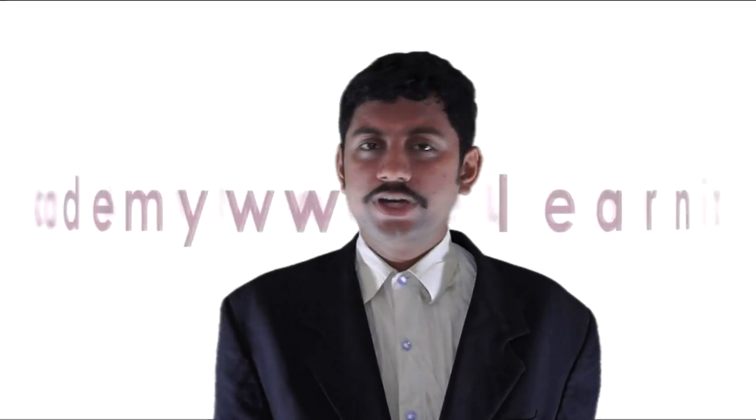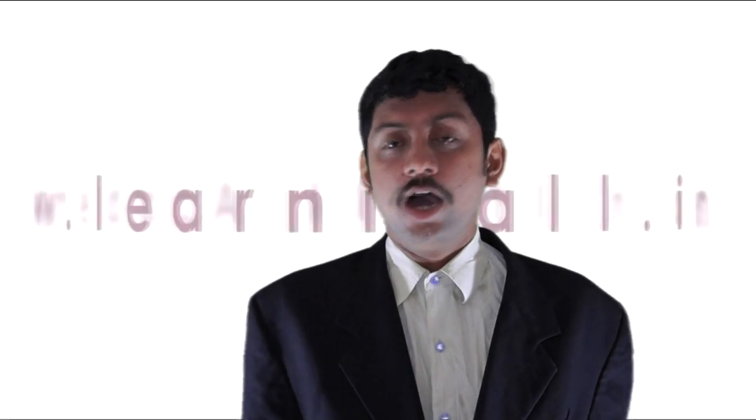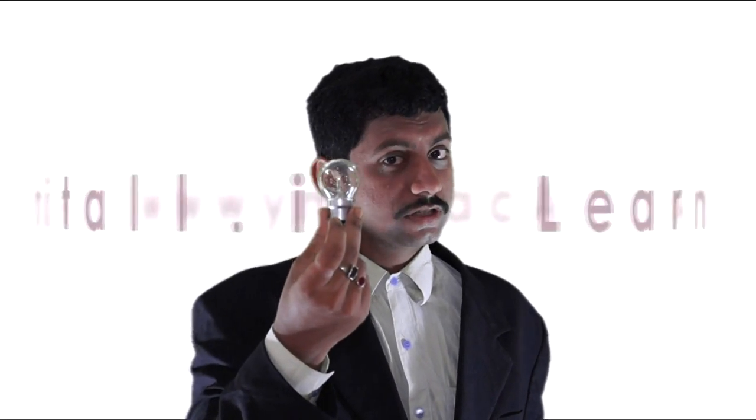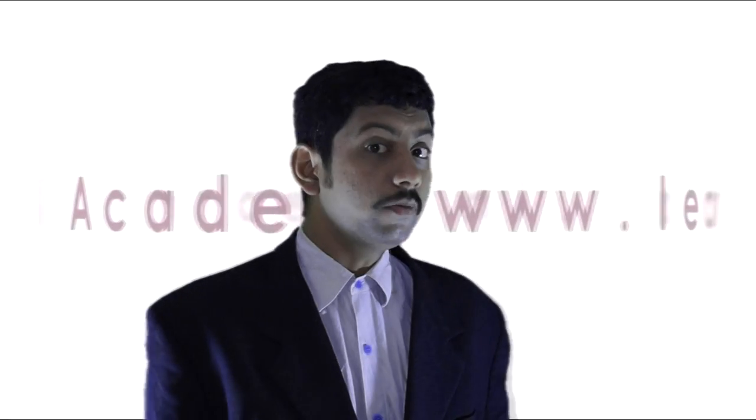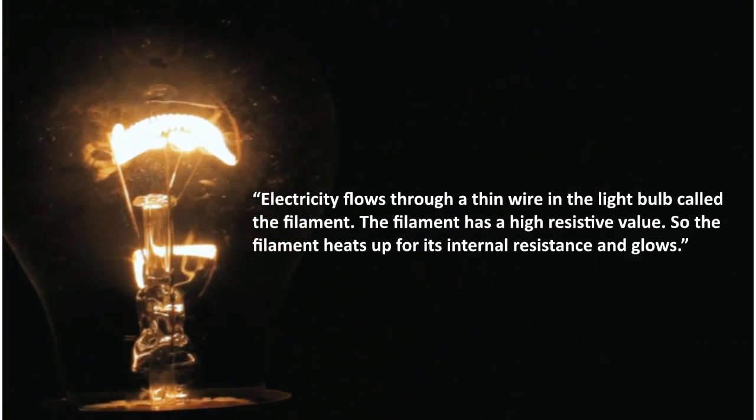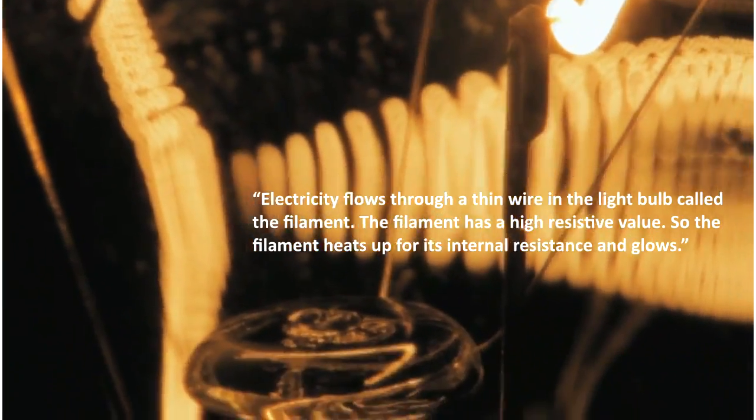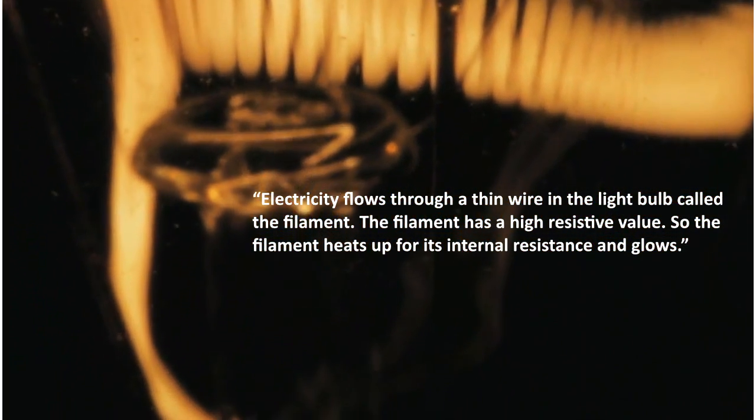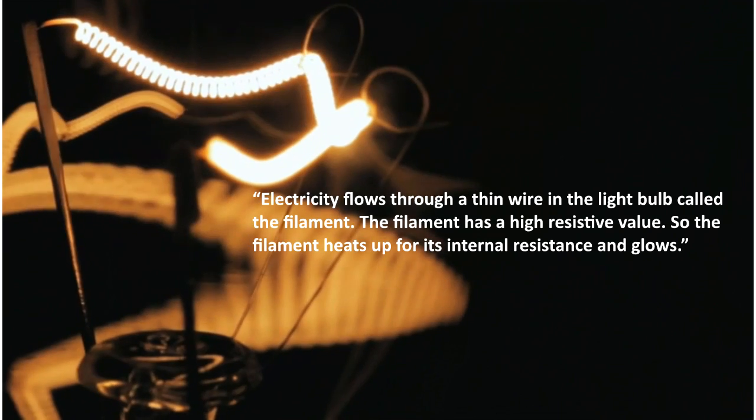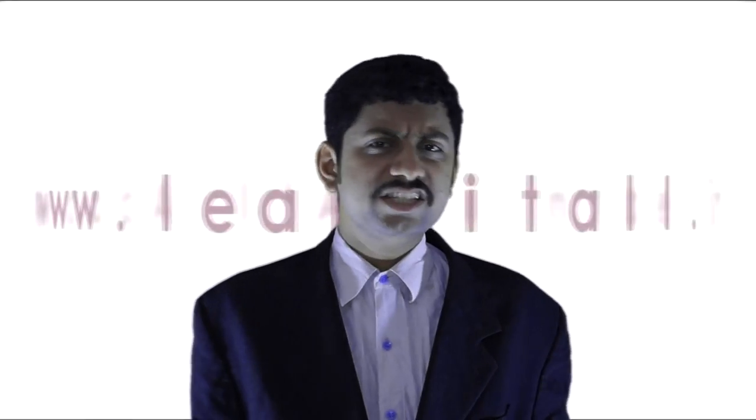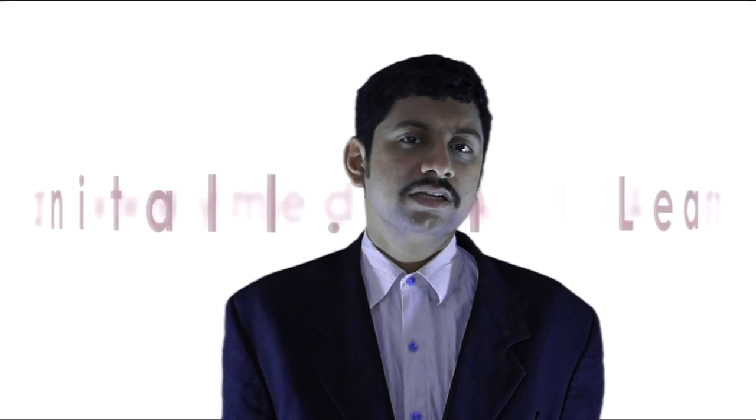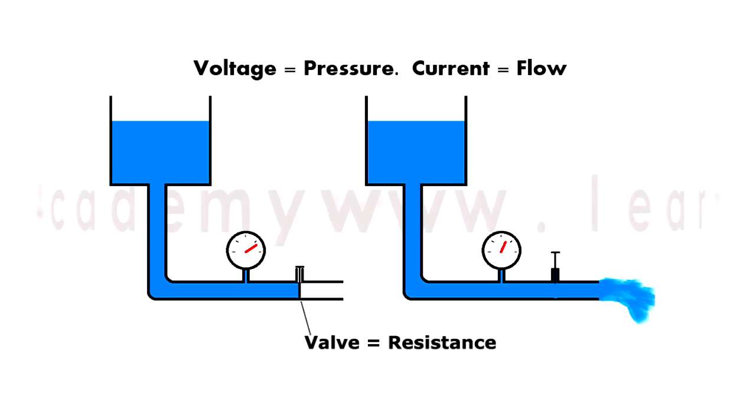Now you might have a very common question in your mind. How does a light bulb glow when it is connected to an electrical source? Well, you will often get the most common answer: electricity flows through a thin wire in the light bulb called the filament. The filament has a high resistive value. So the filament heats up due to its internal resistance and glows. Now resistance is the amount of friction that a material will put against electricity flowing through it.